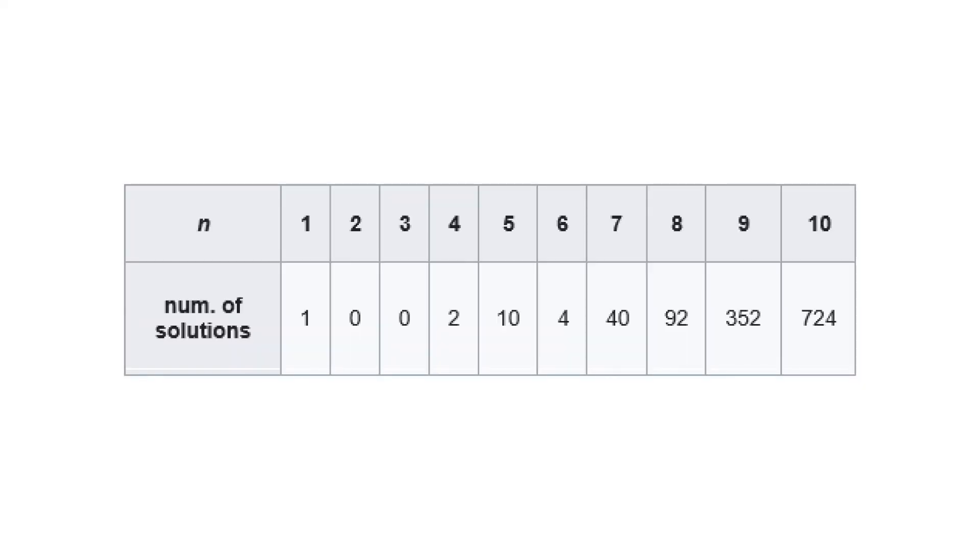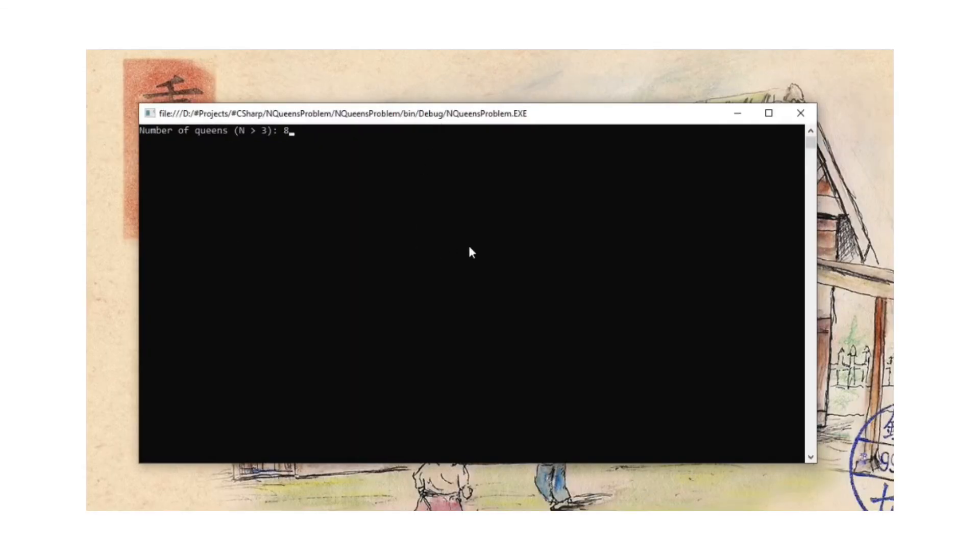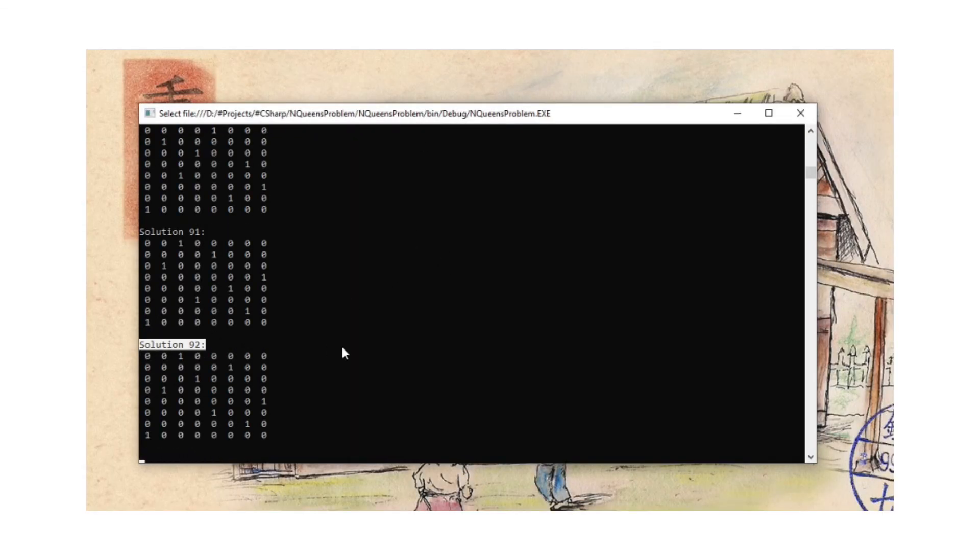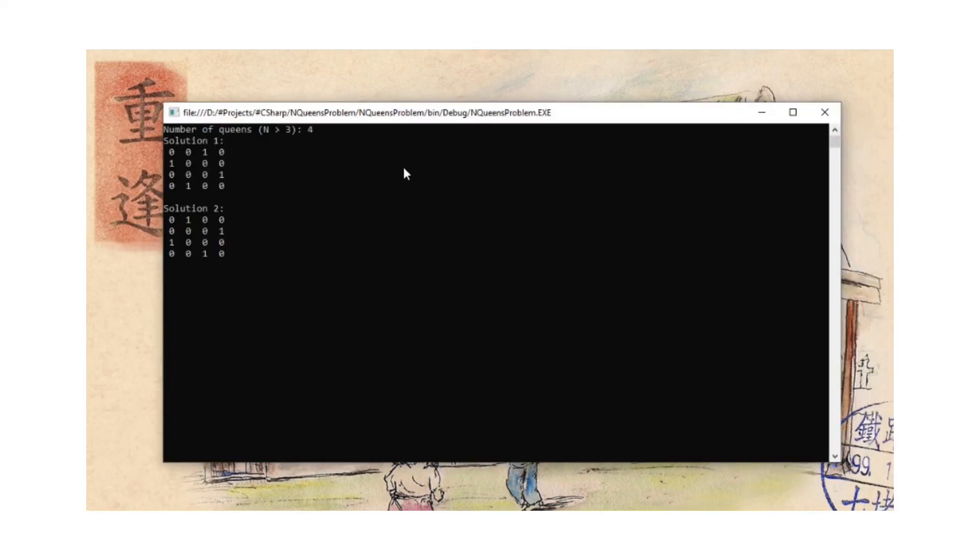If we look at the number of solutions table from before, we can see that it works correctly for any given number. So if I type in 8, it spits out 92 solutions. If I type in 4, it spits out 2 solutions. And so on.